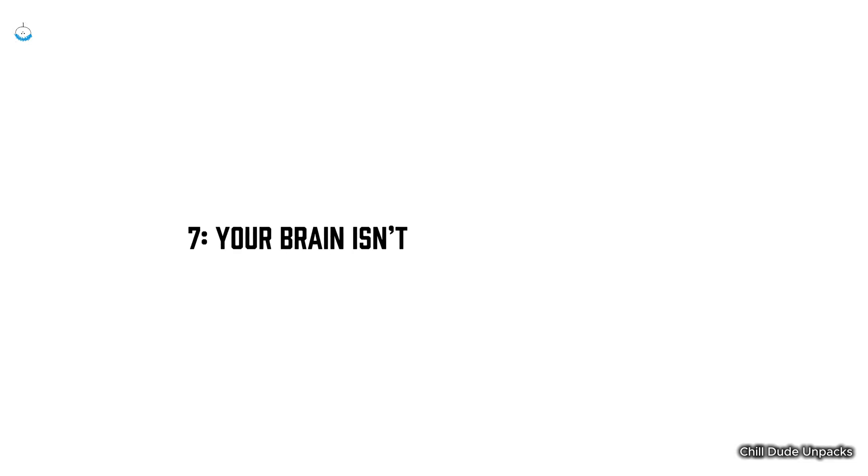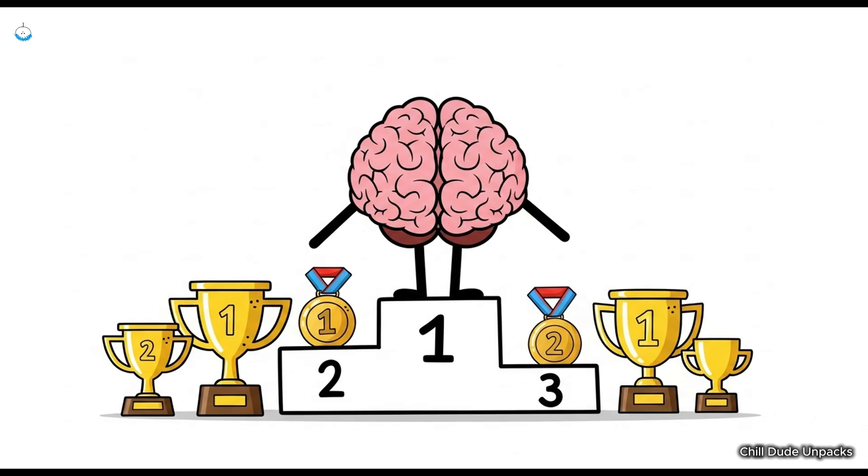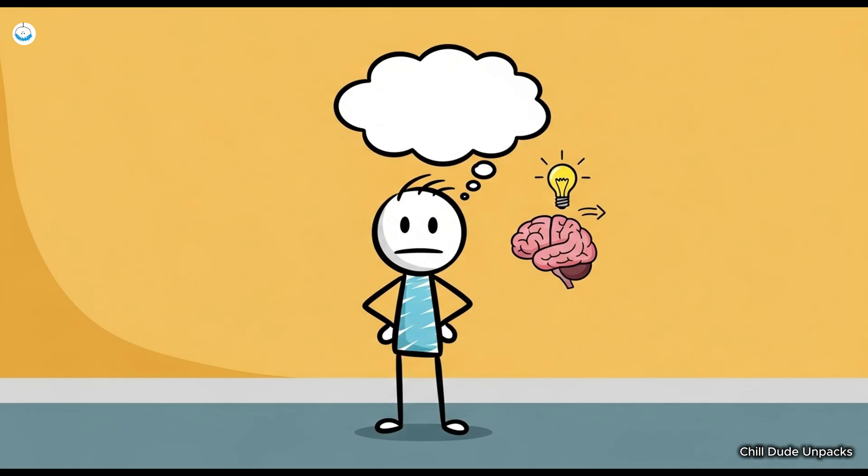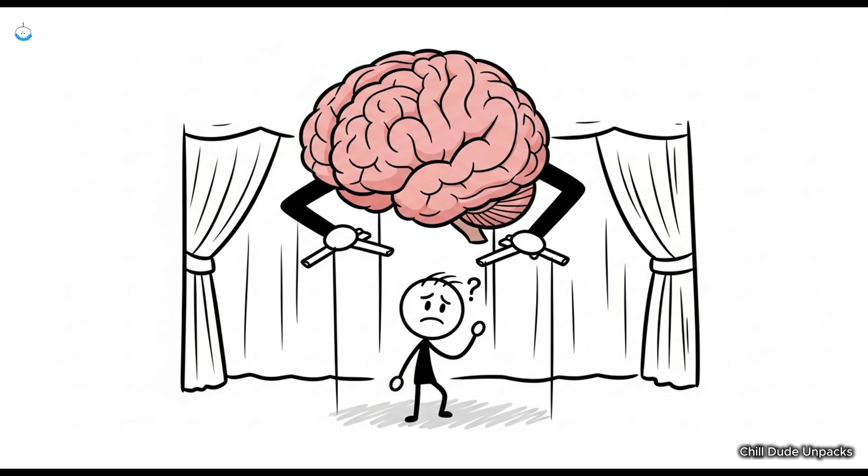Number seven. Your brain isn't as you as you think. Let's talk about your brain, the big boss of your body, the one that gets all the credit for your intelligence, your memory, your creativity. And yet, it can also be your worst enemy. Because while you think your brain is making all the decisions, it's often not. In fact, your subconscious mind is usually the one calling the shots. It's like having a puppet master behind the curtain pulling the strings without you even realizing it.